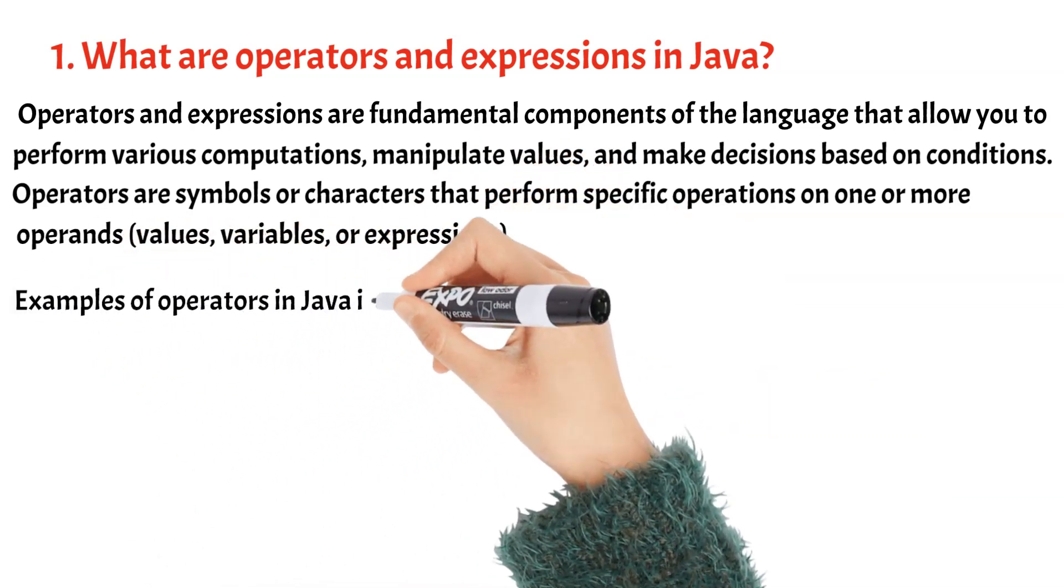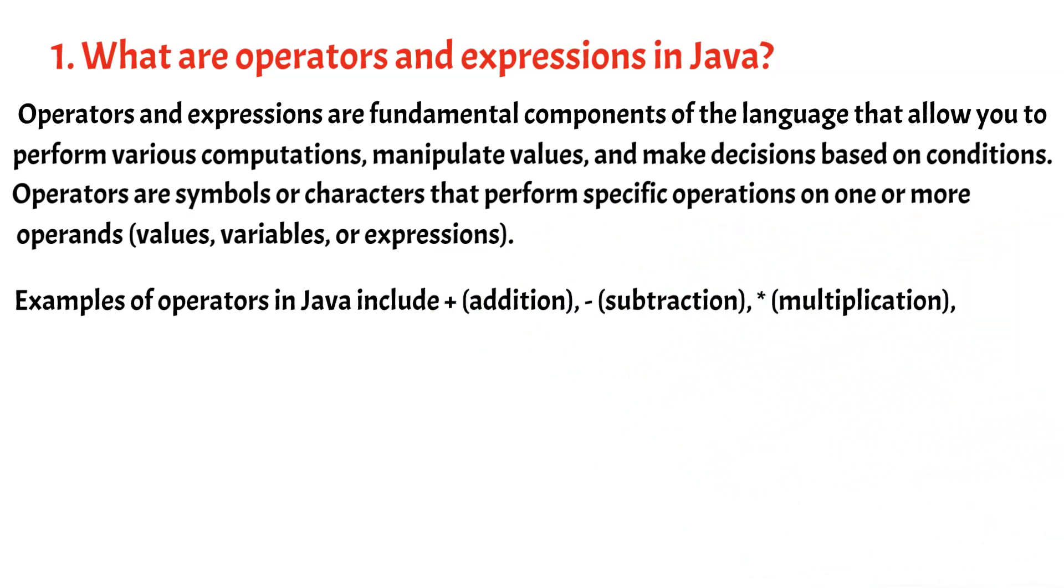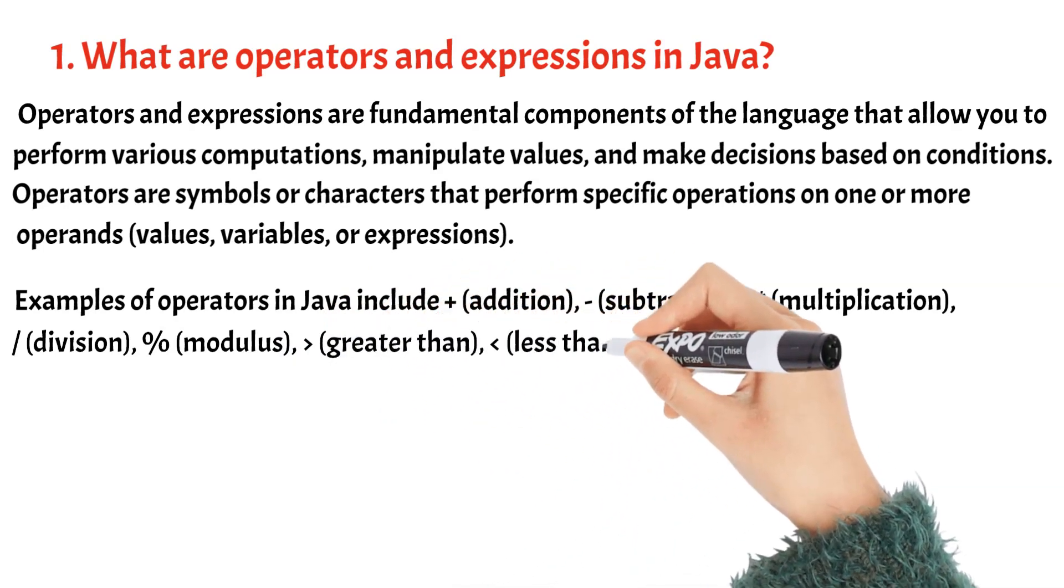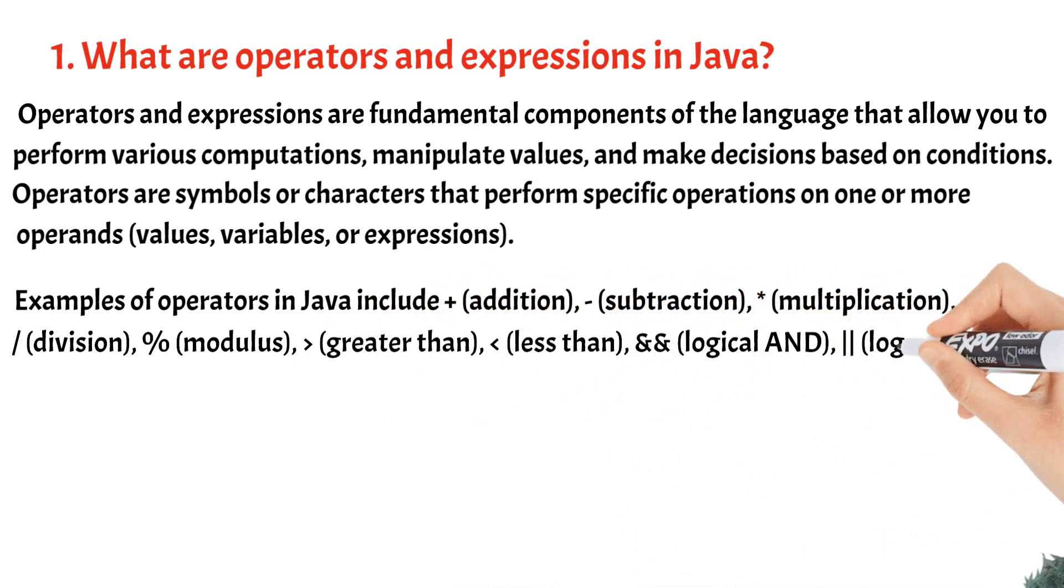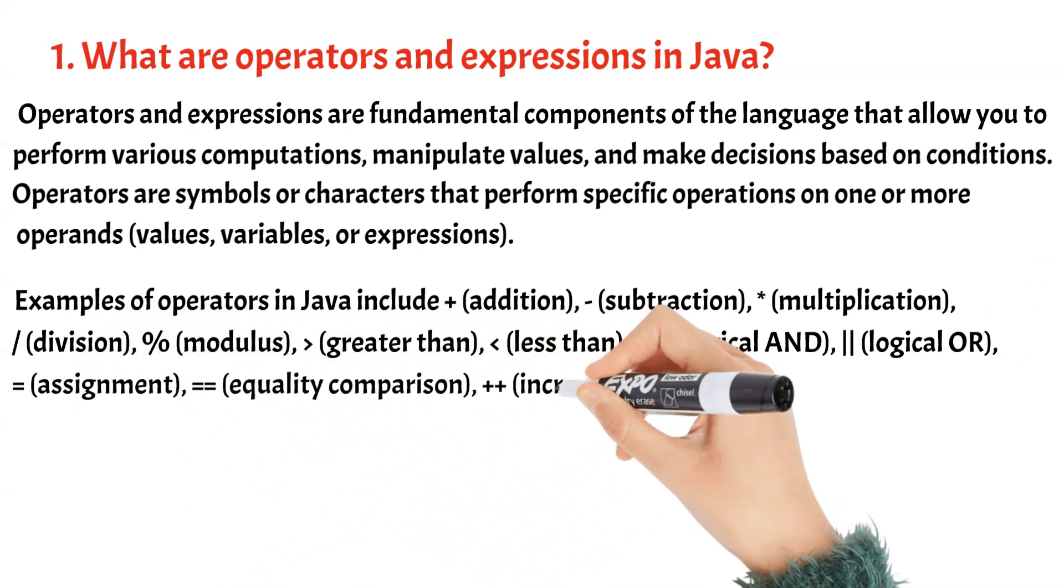Examples of operators in Java include plus for addition, minus for subtraction, asterisk for multiplication, slash for division, percent for modulus, greater than, less than, and-and for logical and, or-or for logical OR, equal for assignment, equal-equal for equality comparison, plus-plus for increment, minus-minus for decrement, etc.